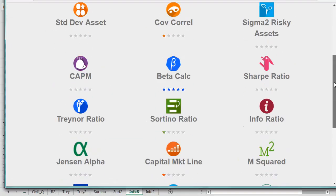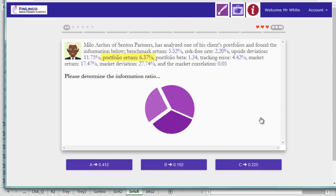Let's try a question then on Finlingo. Here we've got a portfolio return of 6.37% and a benchmark return of 5.52%. Do be careful to avoid anything called the market return. That may be different from the actual benchmark and the benchmark can be anything. It doesn't have to be the market.